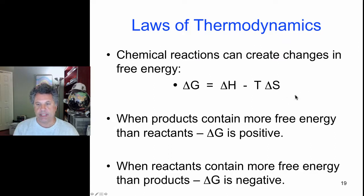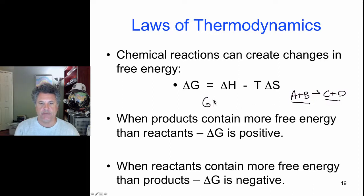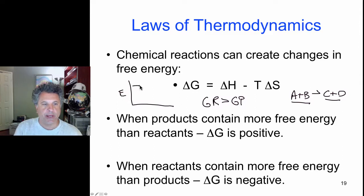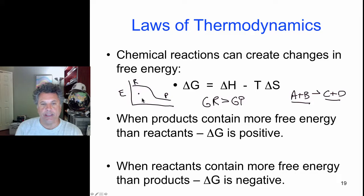Whereas if the reactants contain more free energy than the products — G of reactants is greater than G of products — then on an energy graph the products sit lower than the reactants. In that case the products have less energy than the reactants, and the change in free energy is negative: there is a loss of free energy.